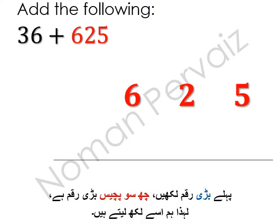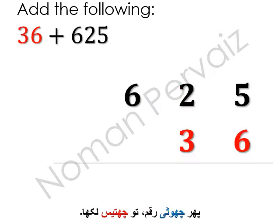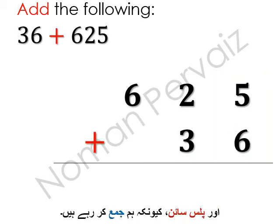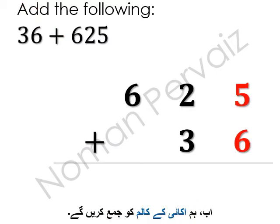Write the larger number first. 625 is the larger number, so we write it. Then the smaller number, so 36 is written. Remember to align the unit digits and the plus sign, because we are adding.